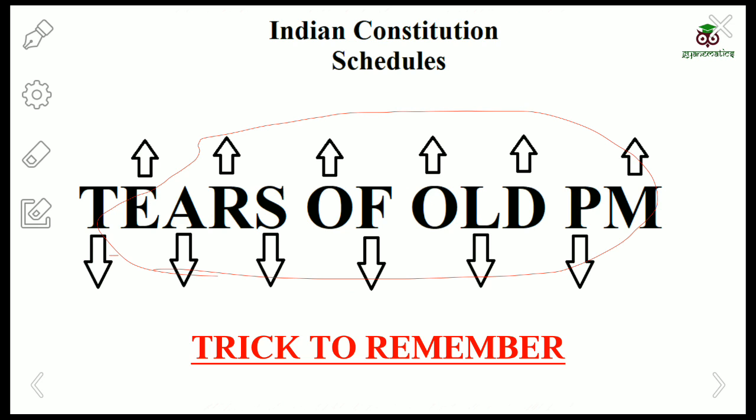We will quickly revise — I will quickly explain what the schedules are and then create a correlation with this phrase. The first schedule talks about Territories. T stands for Territories — States, Union Territories, what are their territorial constituencies, and their related provisions. That is what your first schedule talks about.